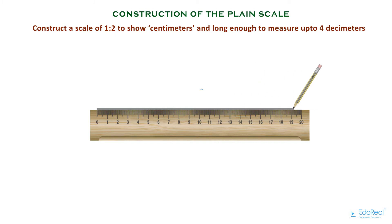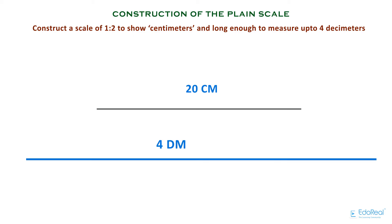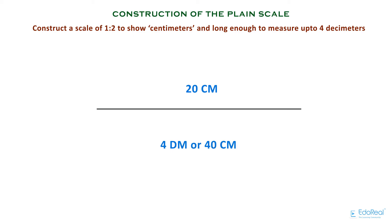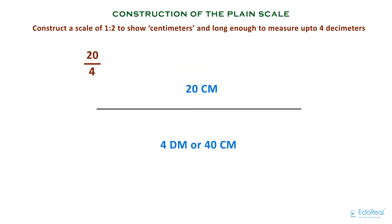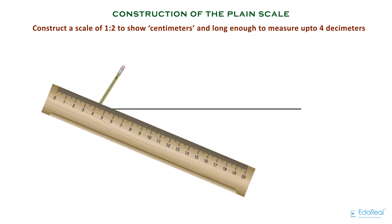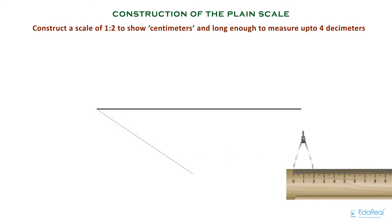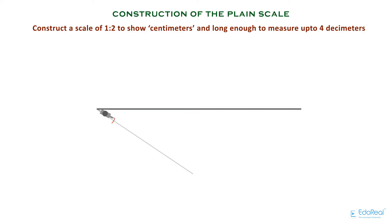Now let's draw the line of length 20 centimeters. In reality, it represents a maximum length of 4 decimeters, or 40 centimeters. We need to divide this line into 4 equal parts, because the question mentions measure up to 4 decimeters. So 20 divided by 4 gives the length of each part, that is 5 centimeters. To divide the line into 4 equal parts, draw a line at an angle to the original line — any angle and any suitable length. Then, with a radius of 2 centimeters, divide the line into 4 parts by putting arcs at 4 places.